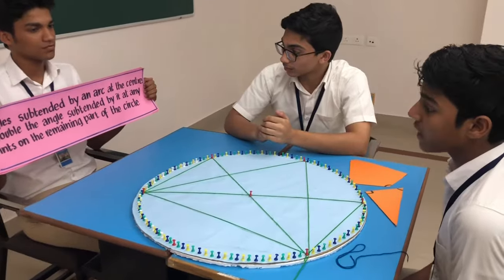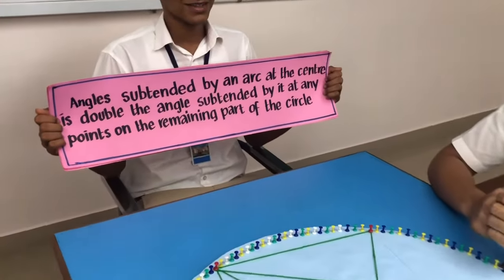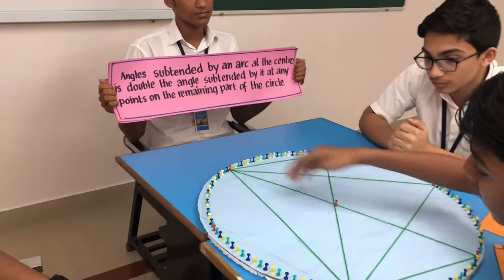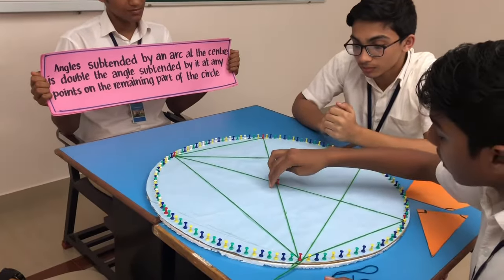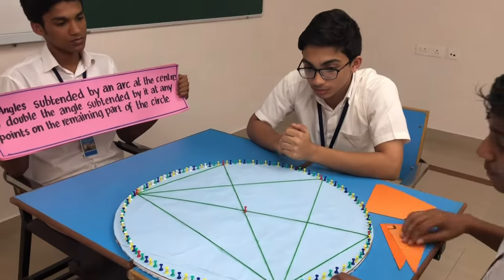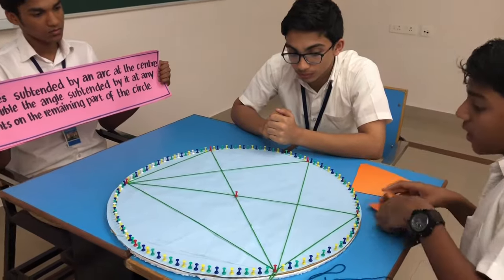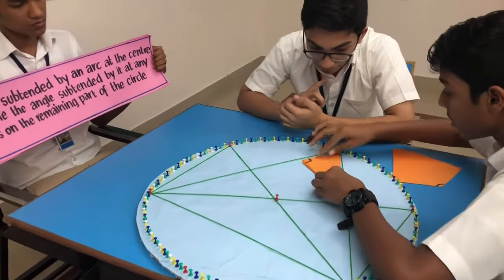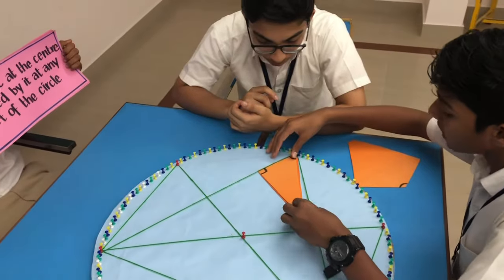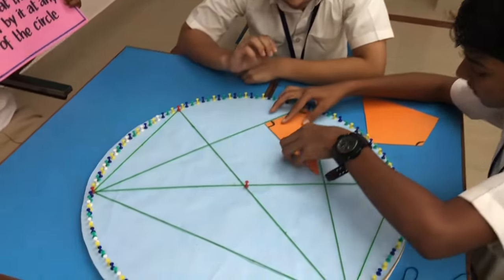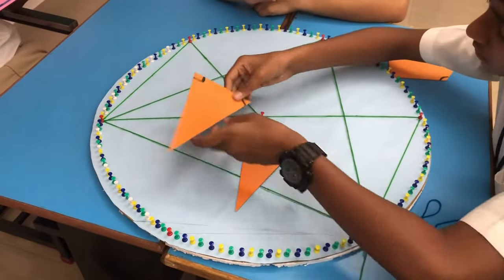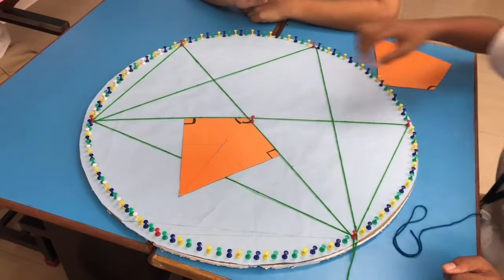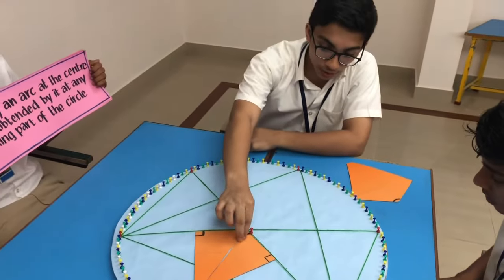The next theorem: the angle subtended by an arc at the centre is double the angle subtended by it at any point on the remaining part of the circle. This is the arc. As you can see, this is the measurement of this angle, and its double will be this angle. So the angle at the centre will be double of this angle.